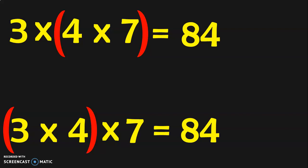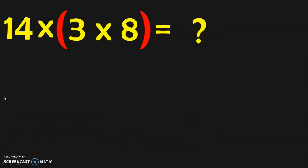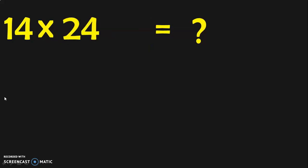Three numbers can be grouped in any order and multiplied, and you will get the same answer. The next sum we are going to see is 14 into 3 into 8 is equal to what? Here I have grouped 3 into 8 as a single group. What is 3 into 8? 3 eights are 24.